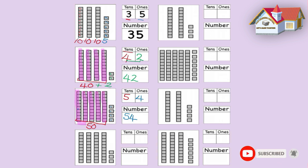Let's look at the fourth question. Let's count in tens again — we know these are tens base, they have ten blocks in one stick because we counted them previously. 10, 20, 30, 40. How many tens do we have? 4 tens. Let's count the ones: 1, 2, 3. How many ones do we have? 3 ones. Well done, we do have 3 ones. 4 tens and 3 ones makes 43.